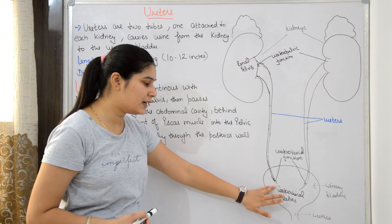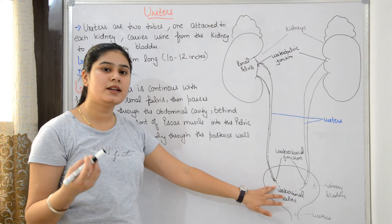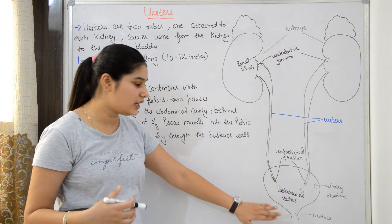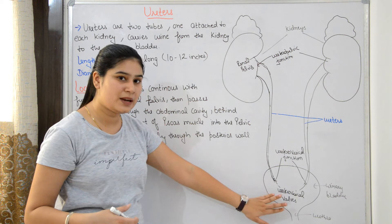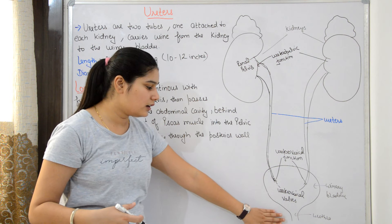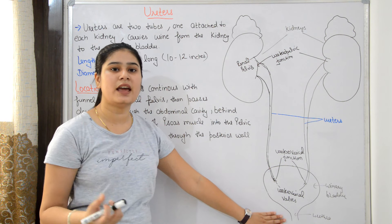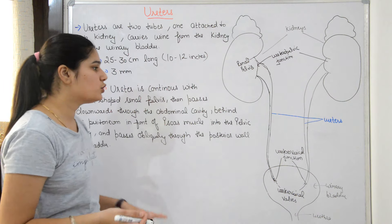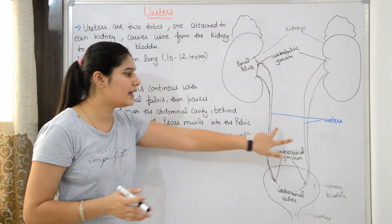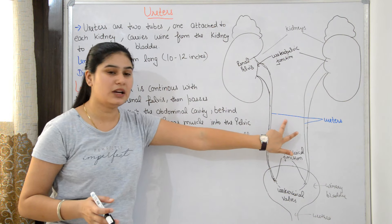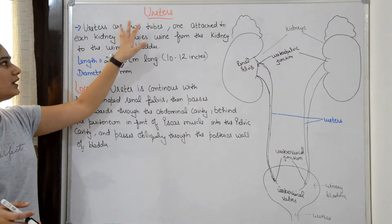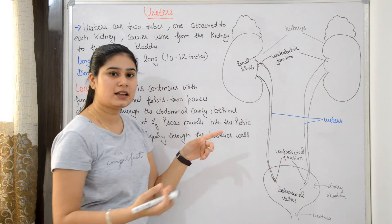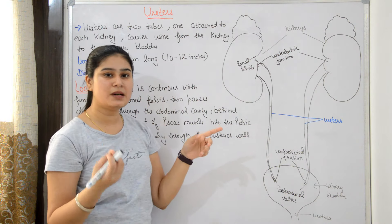In the urinary bladder, urine is temporarily stored and then excreted out through the urinary system. We are studying ureters as these two thick muscular tubes.